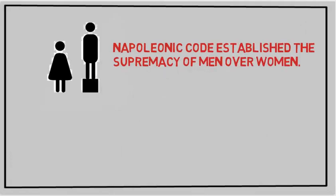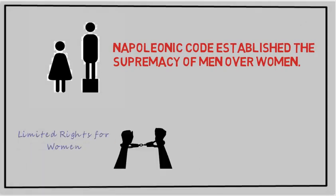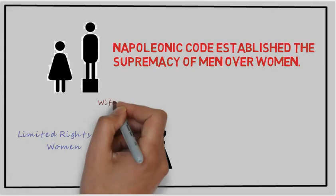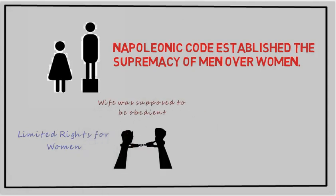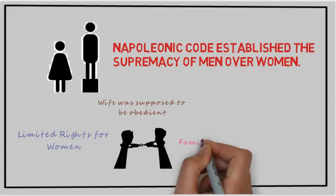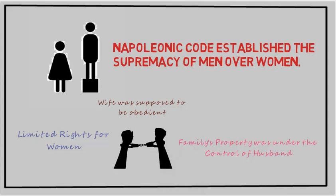But we also need to remember that the Napoleonic Code established the supremacy of men over women and children. Women were given very limited rights. A wife was supposed to be obedient to her husband. Family's property fell completely under the control of the husband. Thus, the Napoleonic Code made the authority of men over their families stronger, and it also reduced the rights of illegitimate children.